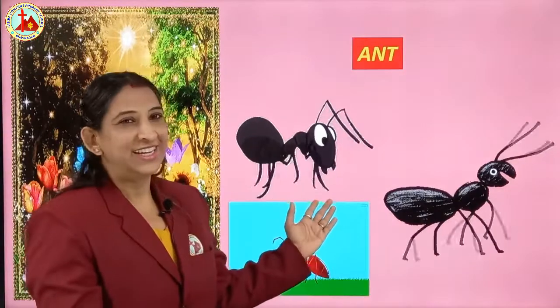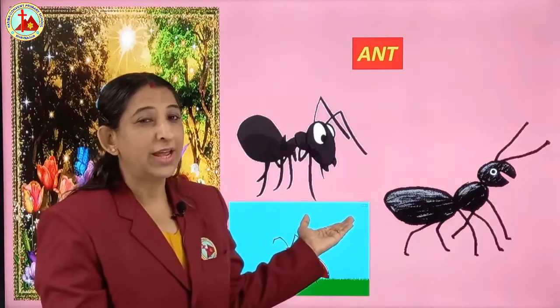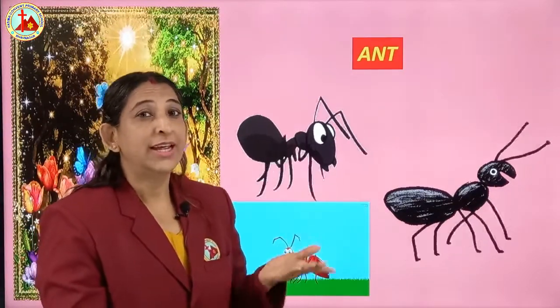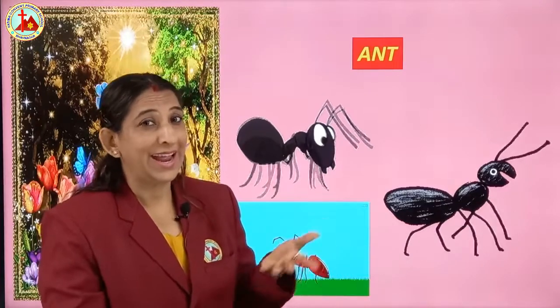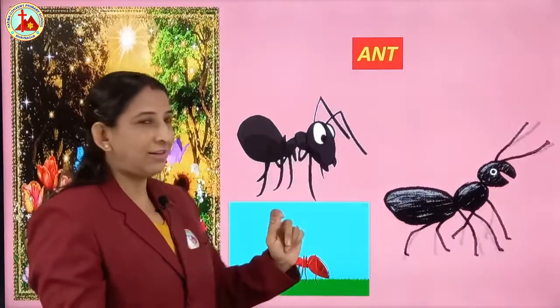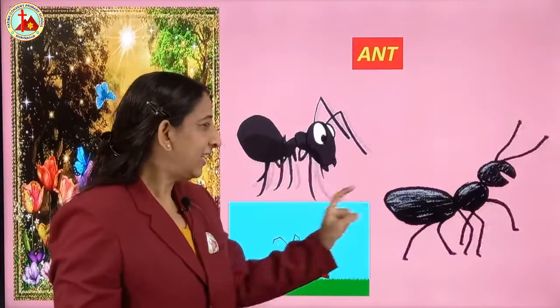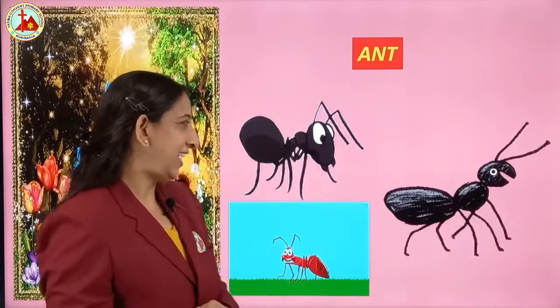Next is ant. You all know — we have learned in ABC also, A for ant. Black color ant and red color also ant, but the red one bites very hard. Which insect? Ant.